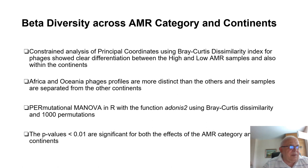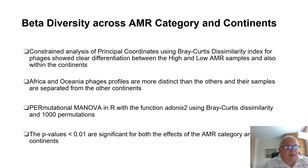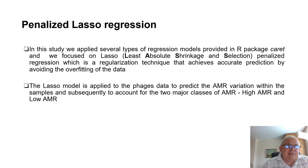Using permutational MANOVA with the ADONIS II library including Bray-Curtis similarity and 1000 permutations, the values are significant for both the IMR category and for the continents.